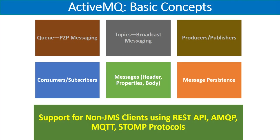Whenever a producer produces a message, they send it with certain properties, header information, and conditions which we will see when discussing messages. The next important concept is consumers and subscribers. Whenever a message has been published and sent to a queue or topic, it must be consumed or subscribed to by other parties on the receiving end. These consumers or subscribers will be listening or consuming messages from those queues or topics and then processing the received messages.